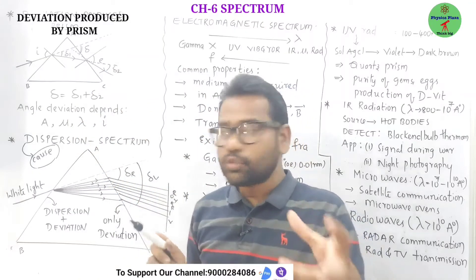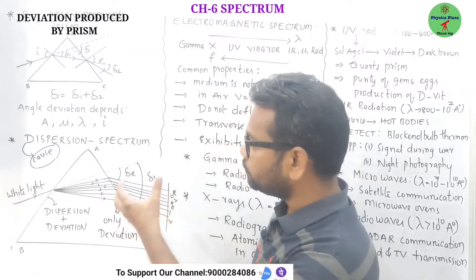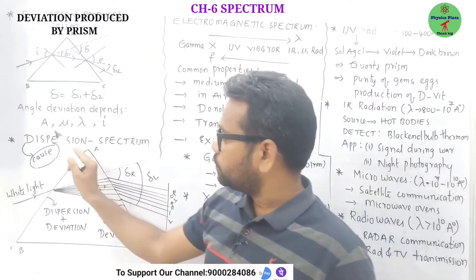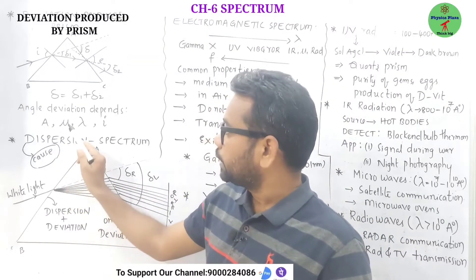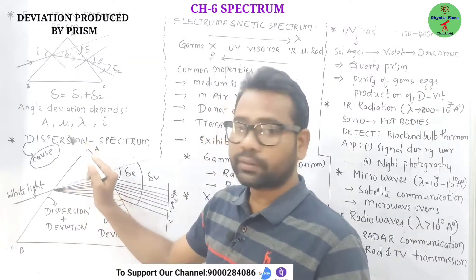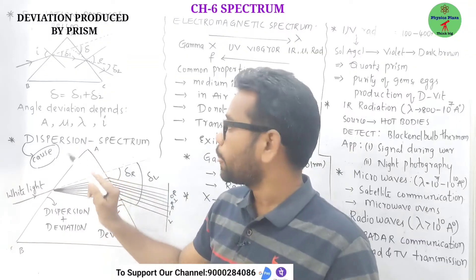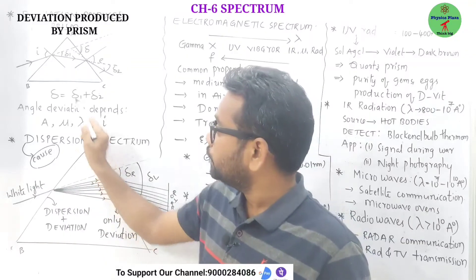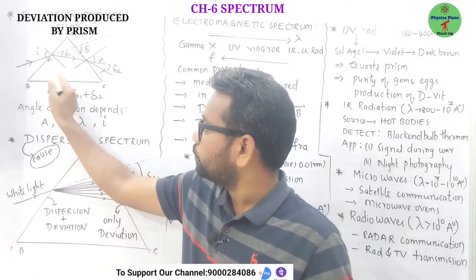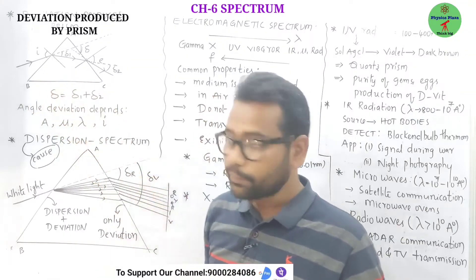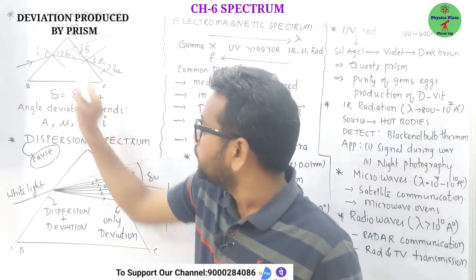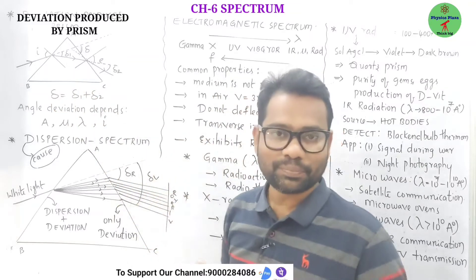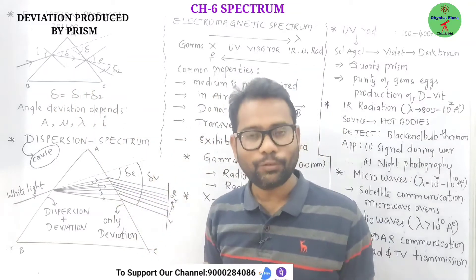On which factors does the angle of deviation depend? The angle of deviation depends on the angle of the prism, the refractive index of the prism, the wavelength of the light incident on it, and the angle at which the light is incident.